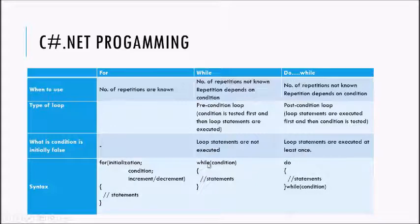So when you want to execute statements at least once regardless of the condition, or if the condition is false, go for the do-while loop. When you want to execute statements only if the condition is true, go for the while loop.